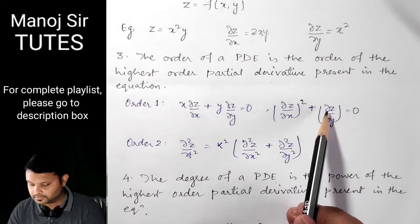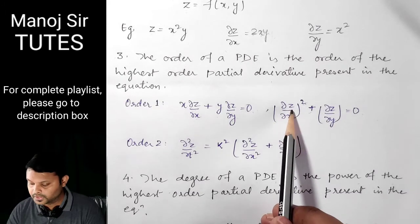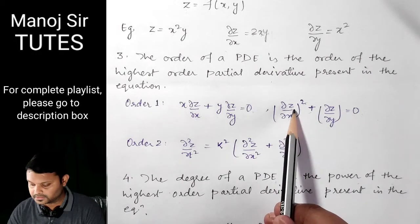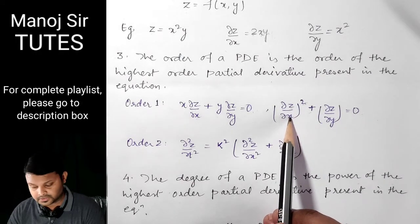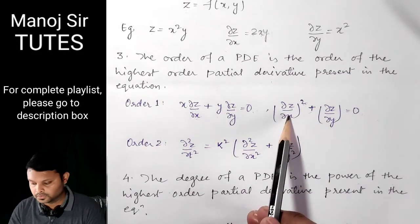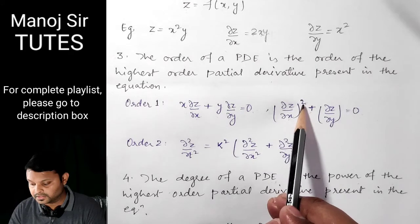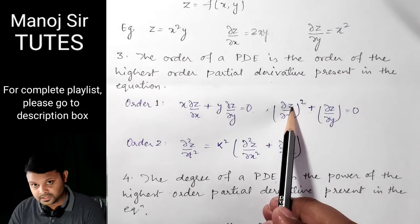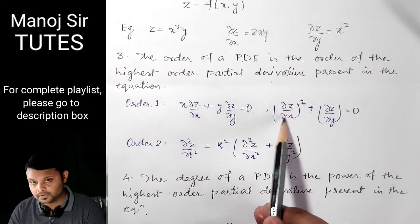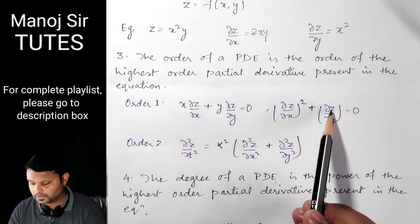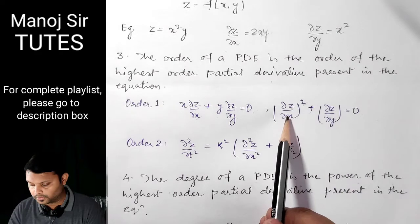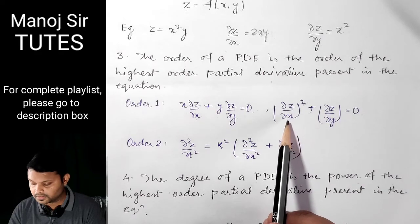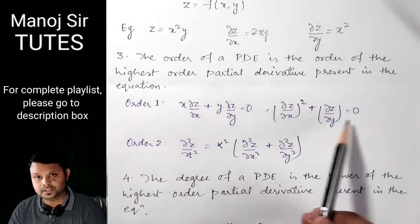Now the second example of Order 1. Here you can see we have differentiated Z with respect to X partially only once. This is power 2 — that is (DEL Z upon DEL X) squared — but we have differentiated Z with respect to X only once, so the order of this term is 1. Similarly, the order of the other term is also 1. So the highest order partial derivative present in this equation is 1.